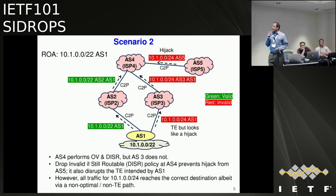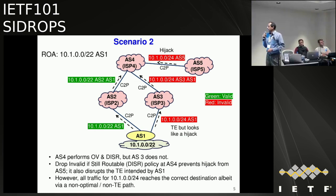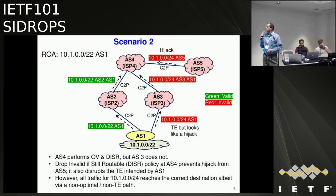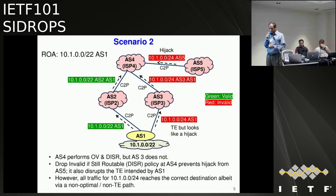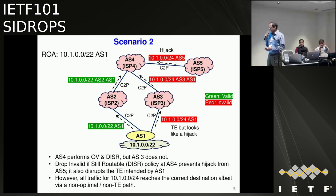Now we look at a situation where ROAs come into play. There's a ROA for the /22, which makes the more specific invalid — both the traffic-engineering-intended one and the real hijacked one. AS4 applies the DISR policy and drops all the invalids with the more specifics. Because it sees the less-specific is valid, it routes traffic to the less specific. So traffic engineering doesn't work as intended, but the traffic gets to its intended destination.